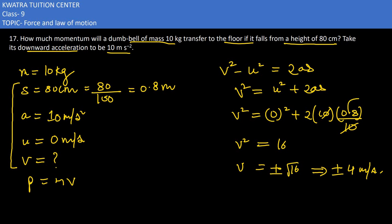v is plus minus 4 meter per second. As the acceleration is positive, so v would be positive, so only value of v is positive 4 meter per second.